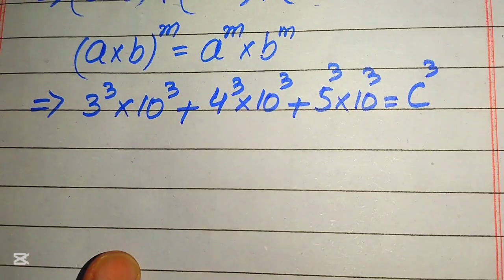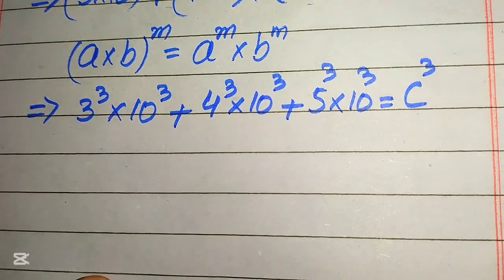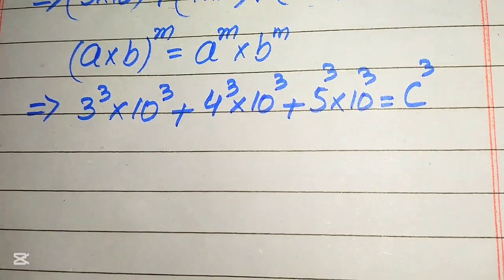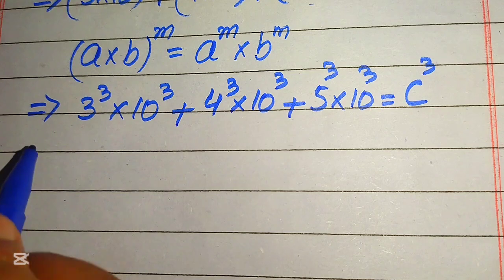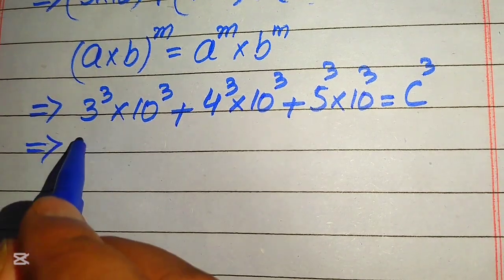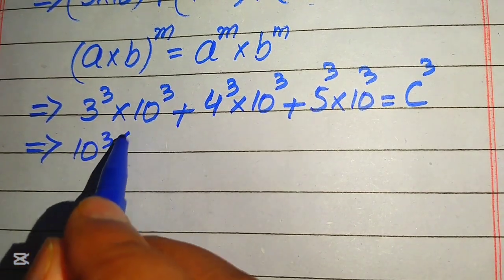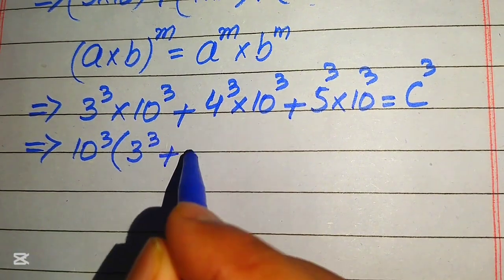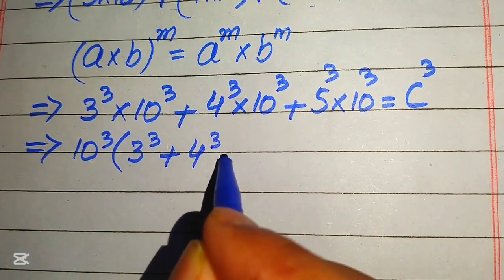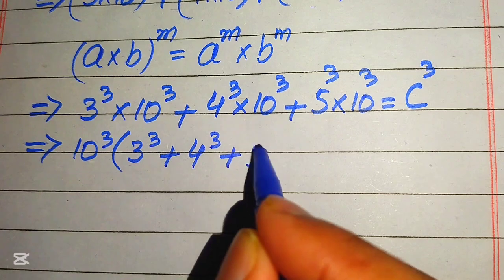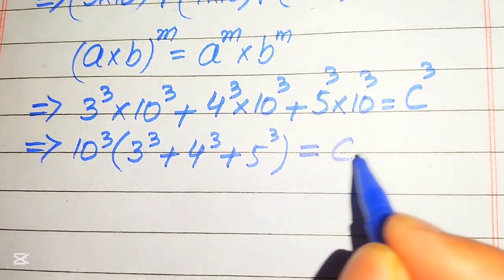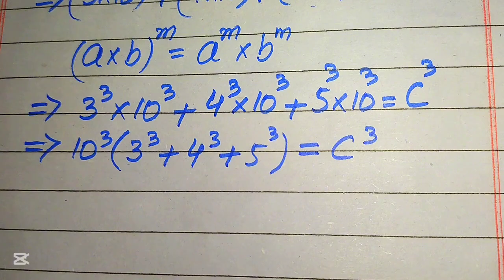Now you see that all of these values contain 10 cubed, which means 10 cubed is the common term. So we factor out 10 cubed, and we get the remaining values: 3 cubed plus 4 cubed plus 5 cubed, and this whole equation equals C cubed.